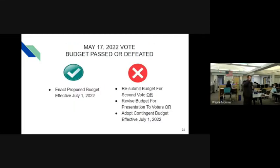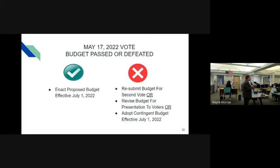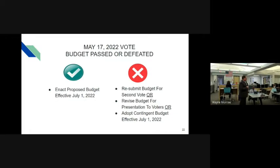If the budget passes on May 17th, we will enact it and go forward with planning for September. If the budget is not approved, we can resubmit the budget to the community for a second vote, revise the budget and present a different one, or adopt a contingency budget, which would become effective July 1st. Contingency budgets restrict categories in which we can spend money—limits on equipment, for example—and things such as community use of space within our schools are limited. The contingency budget would require a 0% tax increase, which we're already doing. I'll take any questions or concerns about the proposed budget or voting process.